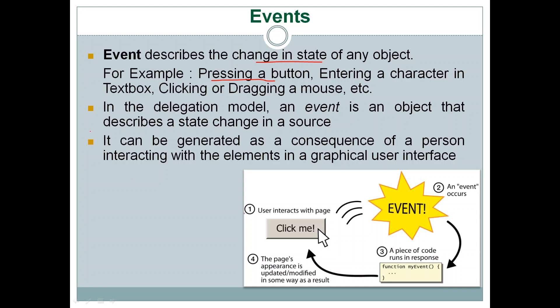In the delegation model, an event is an object that describes a state change. An event can be generated as a consequence of a person interacting with the GUI elements. An event may also be generated when a timer times out — that is, without any user interaction. But most of the time, events are generated when the user interacts with the GUI or its components.